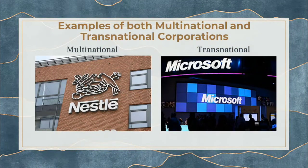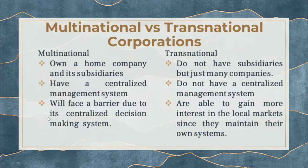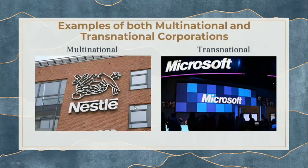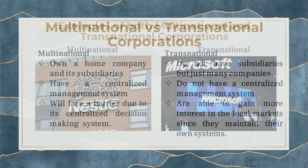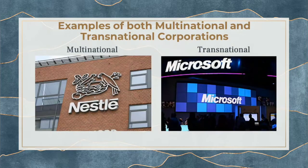A good example of a multinational is Nestlé. There is Nestlé Philippines, Nestlé USA, Nestlé Canada, Nestlé Mexico, and so on, but there is still a parent company in Switzerland — centralized. This is both a strength and a weakness — a double-edged sword. For example, if Nestlé Philippines wants to produce a new product like chocolate, they must still seek approval from Nestlé Switzerland.